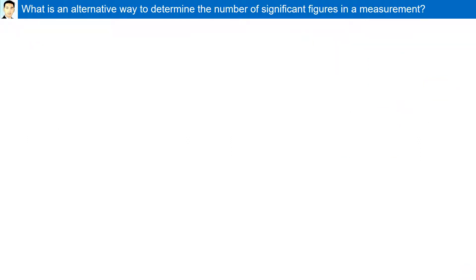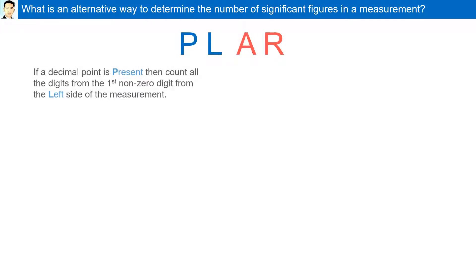What is an alternative way to determine the number of significant figures in a measurement? PLAR. If a decimal point is present (P), then count all the digits from the first non-zero digit from the left (L) side of the measurement.